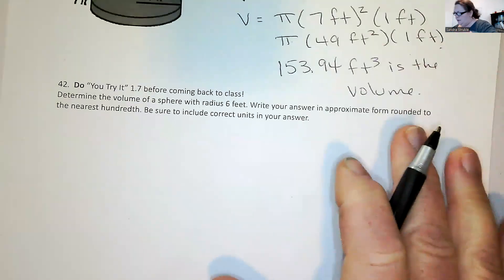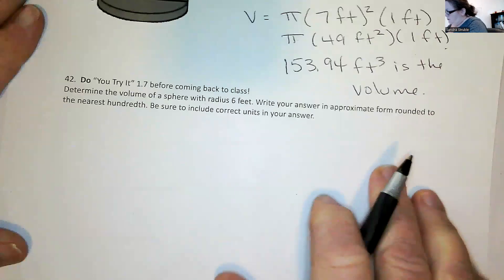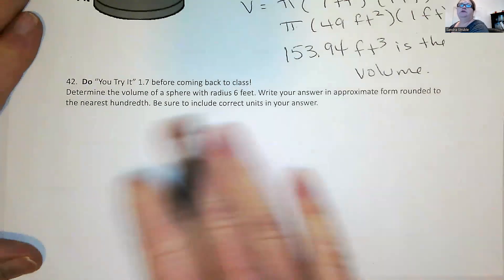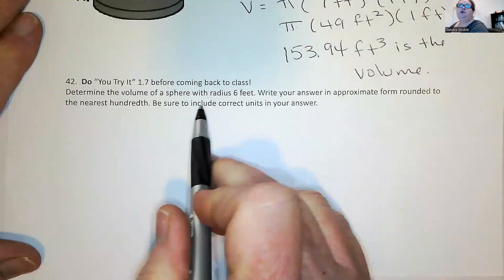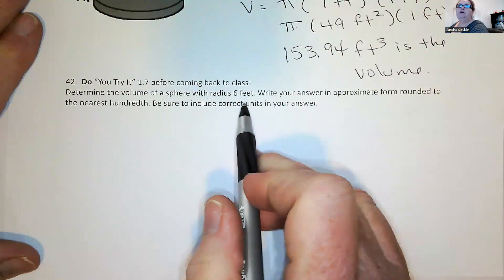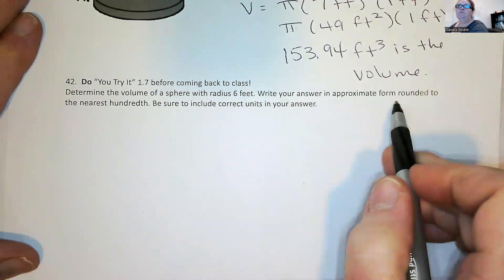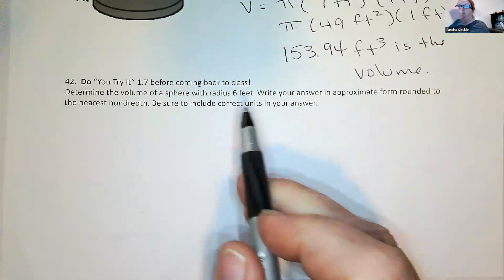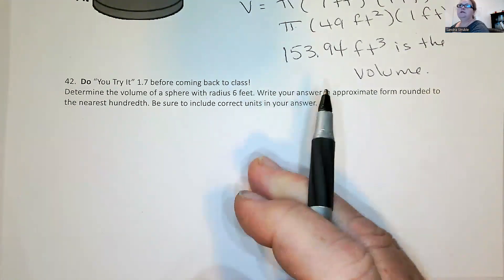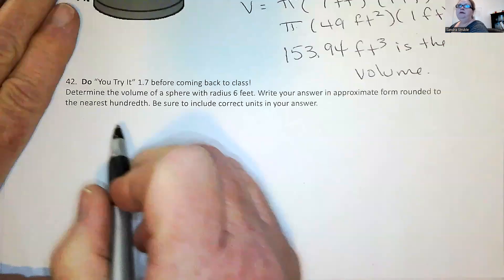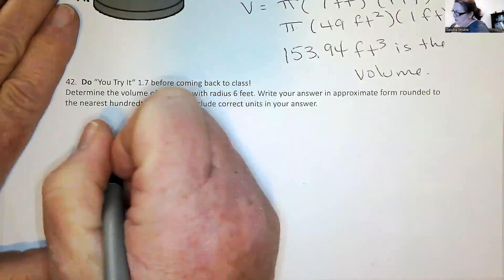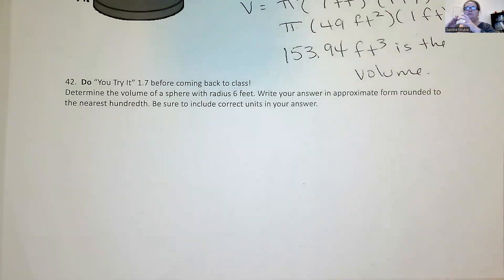This is a you try it, but I'm going to go ahead and do this one because you need to make sure you understand the spheres. So determine the volume of a sphere with radius of six foot, write your answer in approximate form rounded to the nearest hundredth. Be sure to include units in your answer. And of course, a sentence for me. So we've got a sphere. A sphere is just a ball. I can't draw a ball, but I'll do my darndest to do a faux ball.